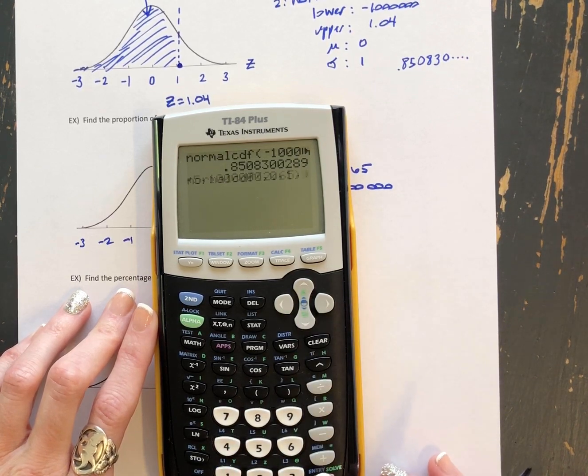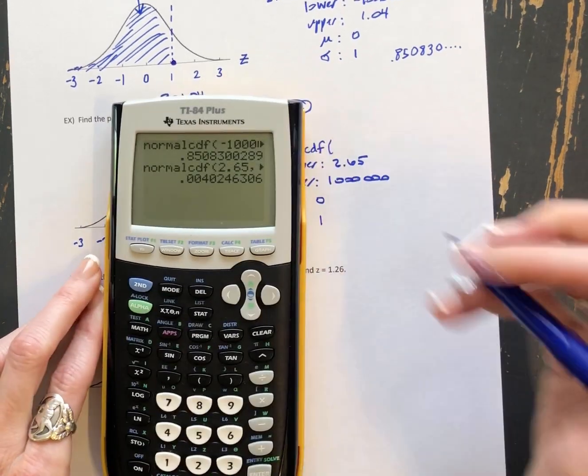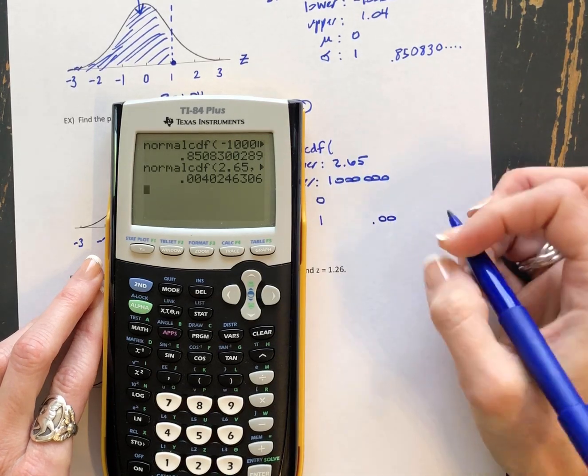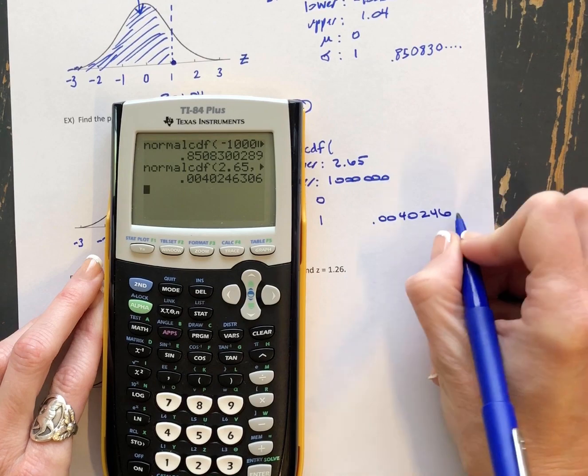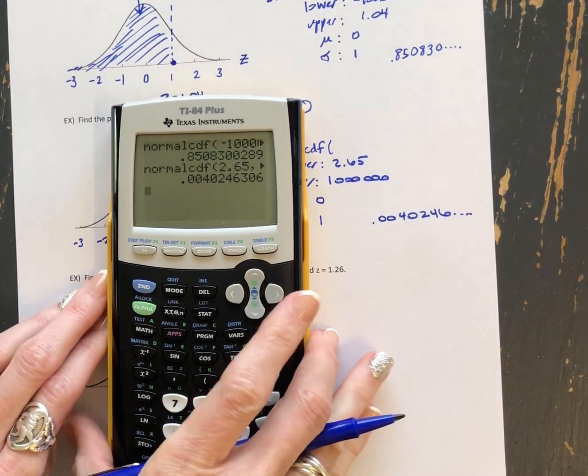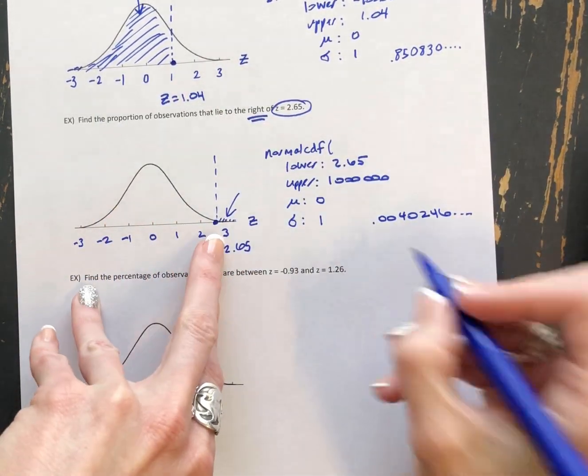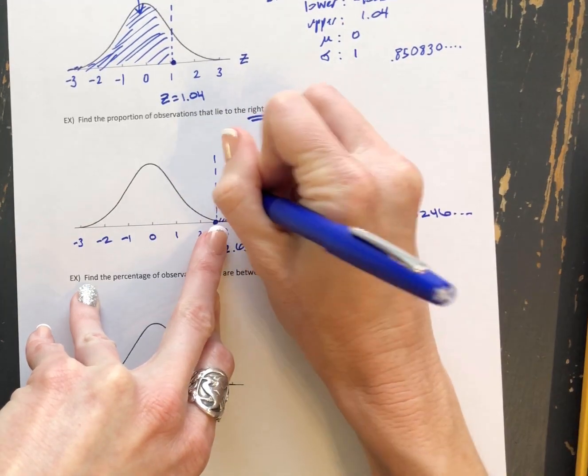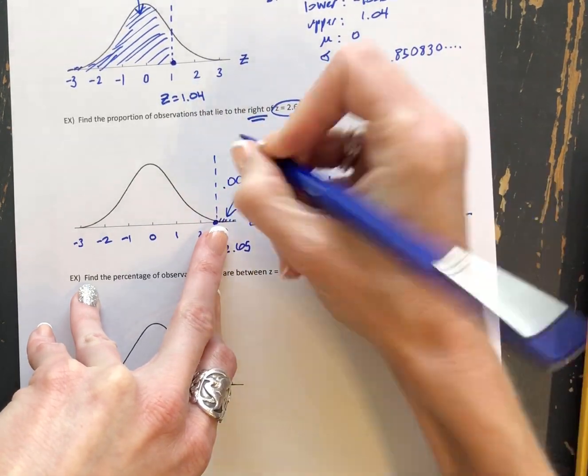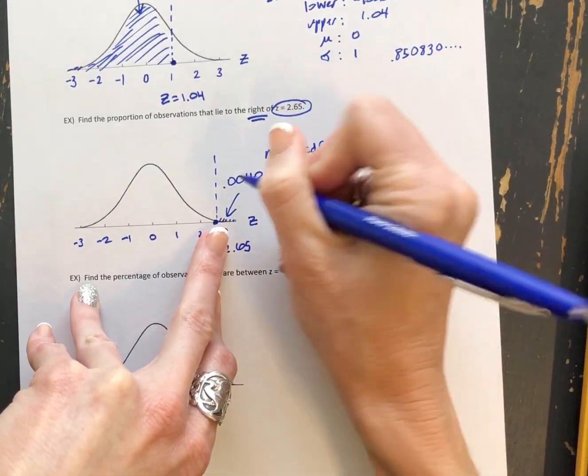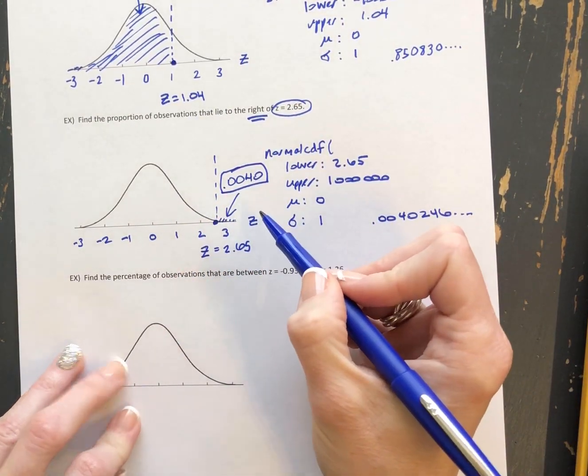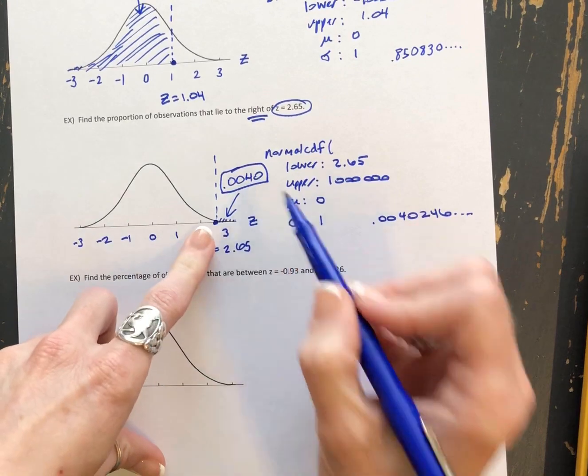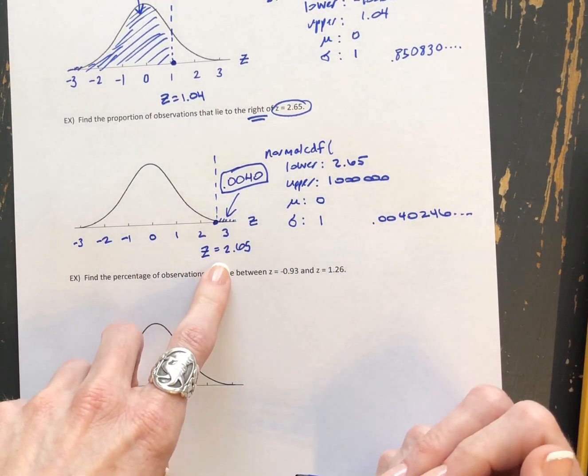And hit enter. And you will get 0.0040246. Again, our area, we're going to take 4 decimal places. So 0.0040 would be our answer there for the proportion of observations to the right of 2.65.